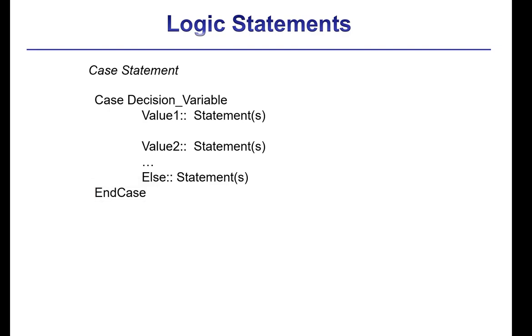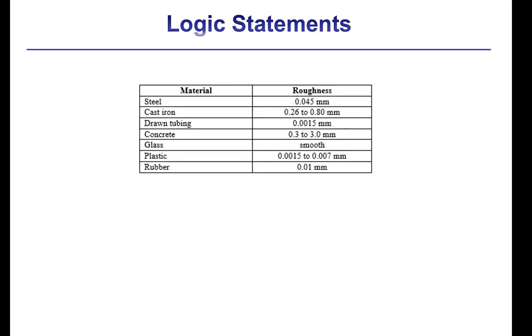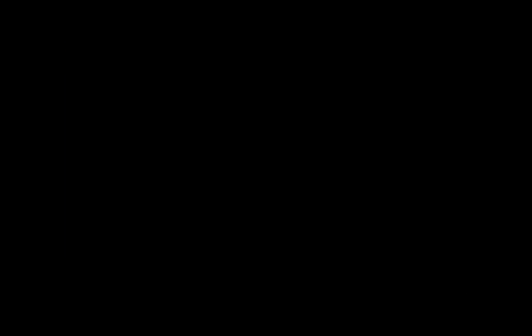So as a simple example, here's a list of roughness values for different kinds of pipes. We might want to write a function that returns the proper roughness value given a string that identifies the pipe. So this is a perfect example of a time where a case logic structure makes a lot of sense. The decision variable is going to be the string pipe dollar, and then these different case labels will be different strings that identify the material. So if a value of pipe dollar is provided that doesn't match any of these labels here, then the function is going to return zero.